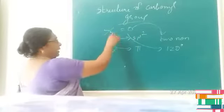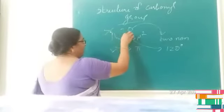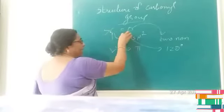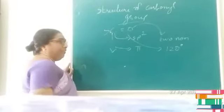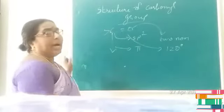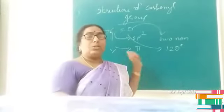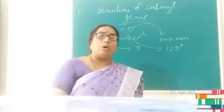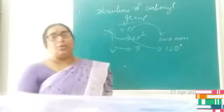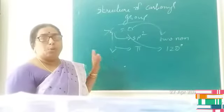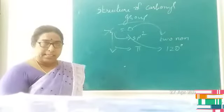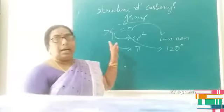Now in addition to this, we know that there is a large electronegativity difference between carbon and oxygen. So this carbonyl C=O bond is polar in nature.